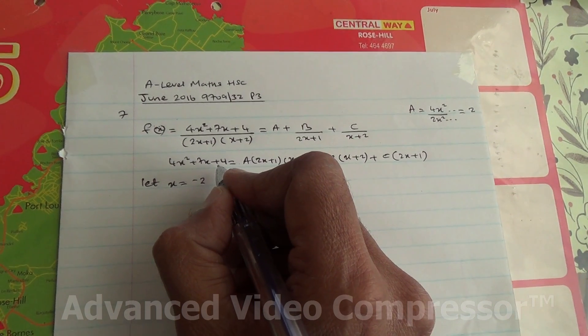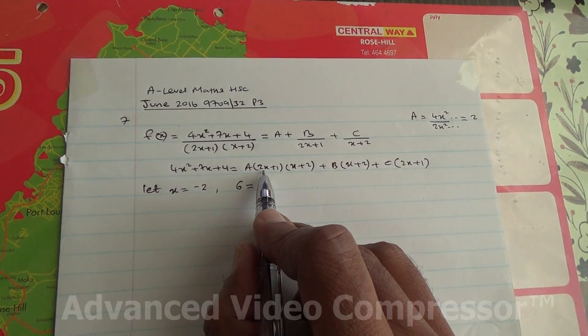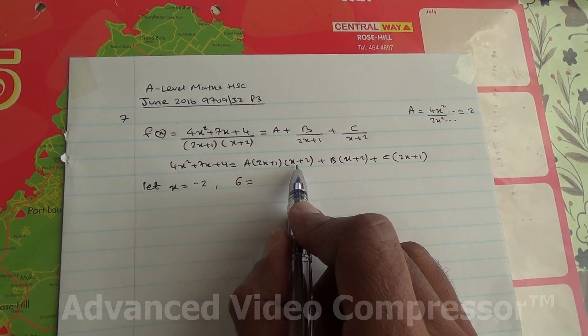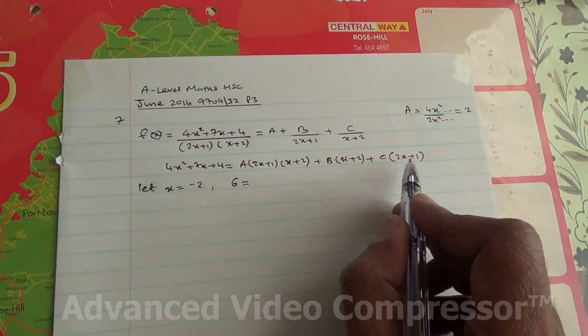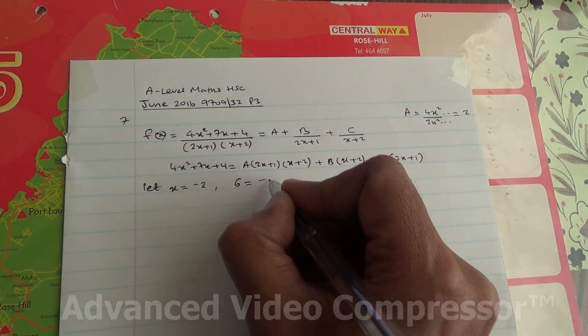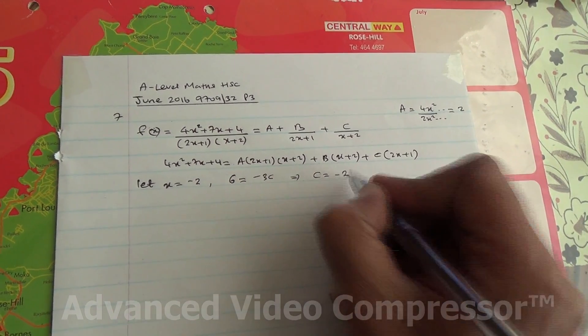Substitute minus 2 in here, you're going to end up with 6. Put minus 2 here, it's going to become 0 plus B times 0. So minus 2 here gives minus 4 plus 1, which is minus 3, so minus 3C. And therefore, we have C is equal to minus 2.